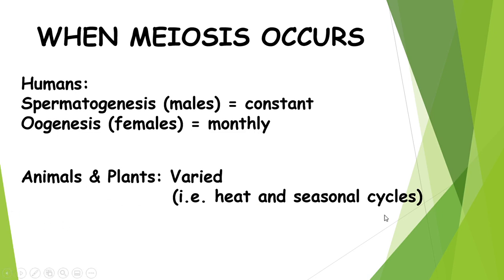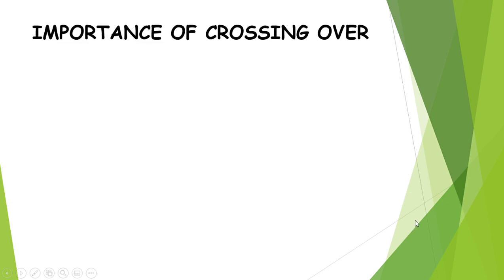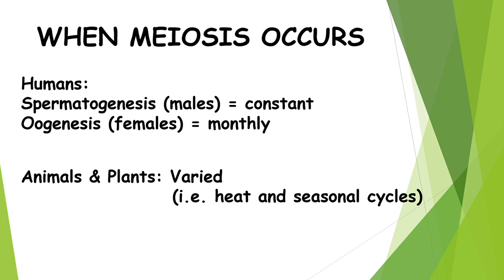For your purposes, anything in this animals and plants category will have to be given to you as a case study. You're not expected to learn all that. You obviously have an understanding of things like heat and seasonal cycles, but no specific examples are something you're going to have to know. That wraps up a bit of the how, where, and when it actually occurs.